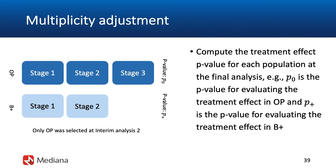I will now walk you through the process of applying a multiplicity adjustment at the final analysis to account for data-driven population selection at the second interim analysis. What you see on this slide in the left-hand panel is a simple visual summary of the three-stage adaptive design employed in this case study. There are two sets of boxes — the top row corresponds to the overall population assessments and the bottom row corresponds to the assessments within the biomarker positive subpopulation. At the end of the study, at the final analysis, we will compute p-values for each population: p0 would be the p-value for assessing the treatment effect in the overall population, and p-plus would denote the p-value for evaluating the treatment effect in the biomarker positive subset.